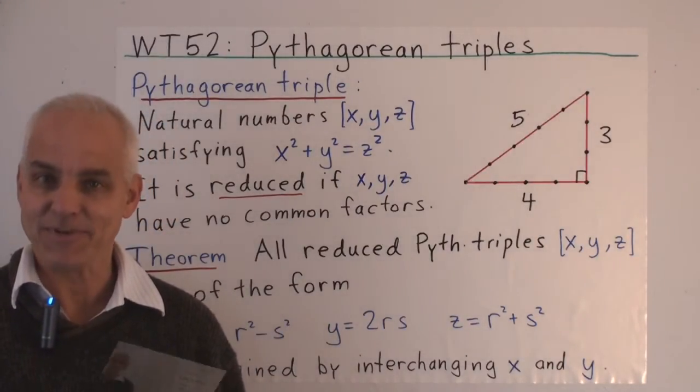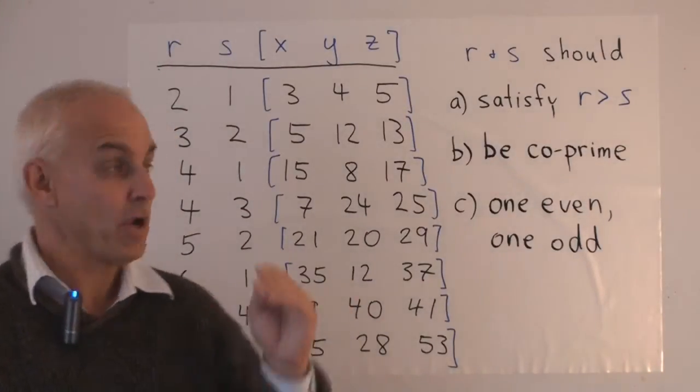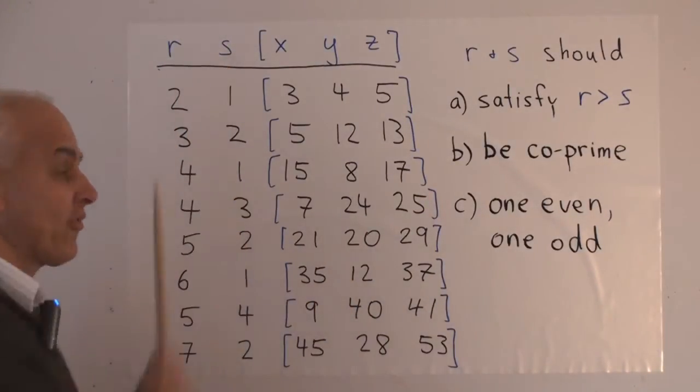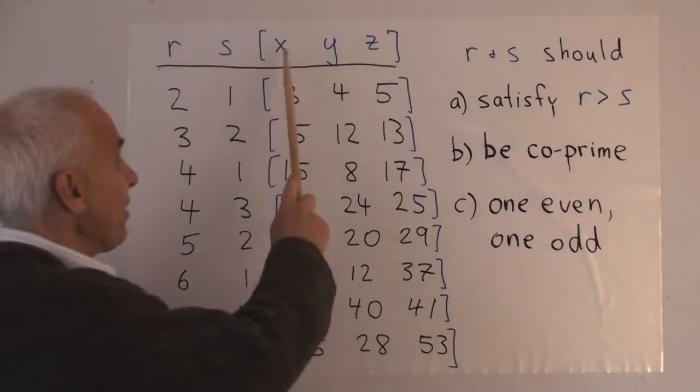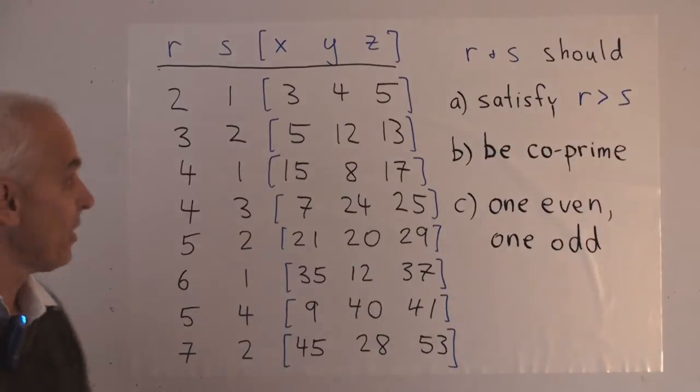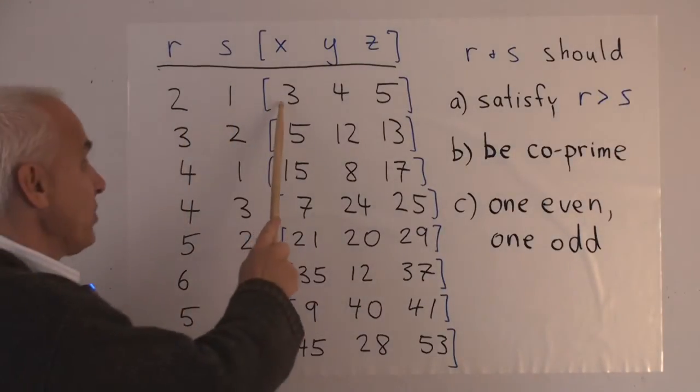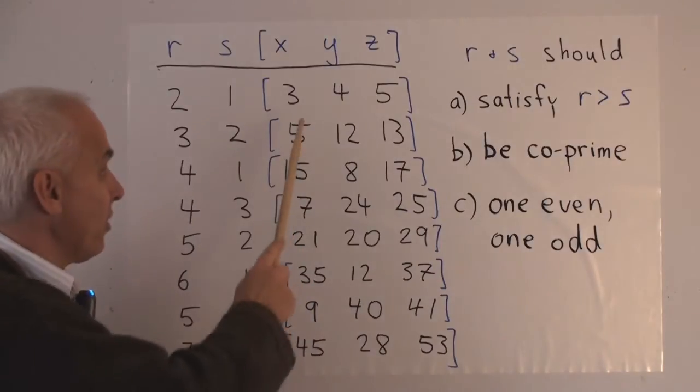Now let's have a look at some examples. So here is a table showing you the parameters r and s, and the corresponding values of the Pythagorean triple x, y, and z. So when r equals 2 and s equals 1, then x, which is r²-s², will be 3.